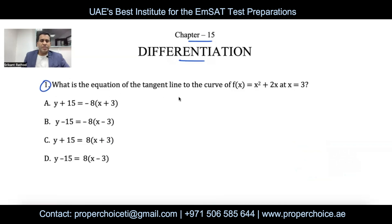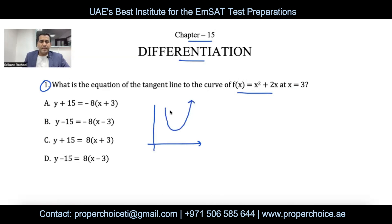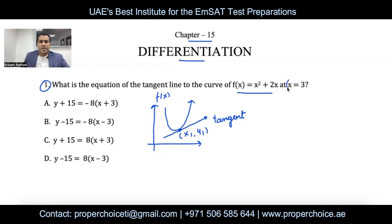What is a tangent line? When you graph the given function in the xy-plane, any line that touches that graph at a specific point is called a tangent line. This line touches the graph at a coordinate point called (x₁, y₁). The value of x₁ here is 3, so we need to find the value of y₁ as well.